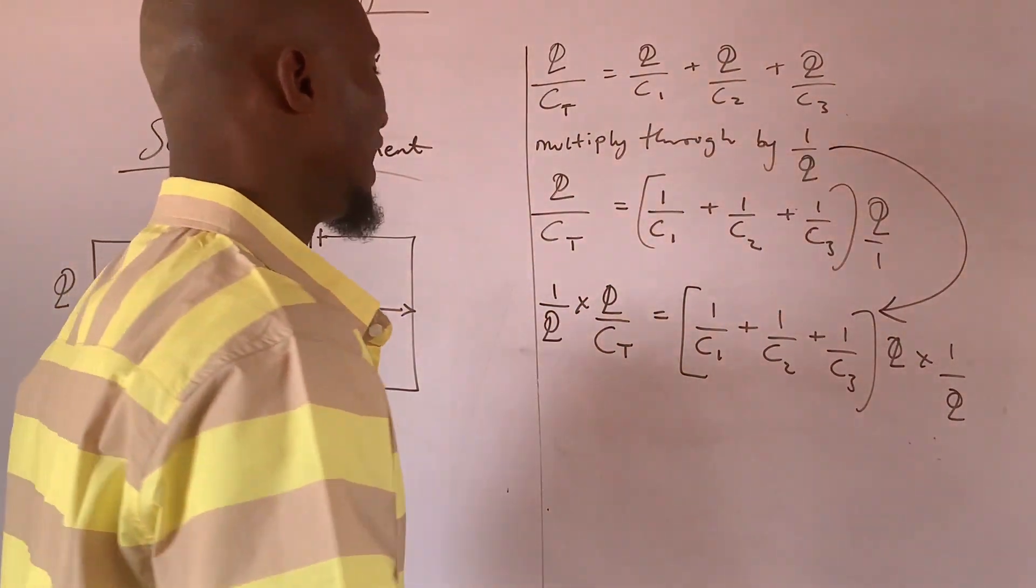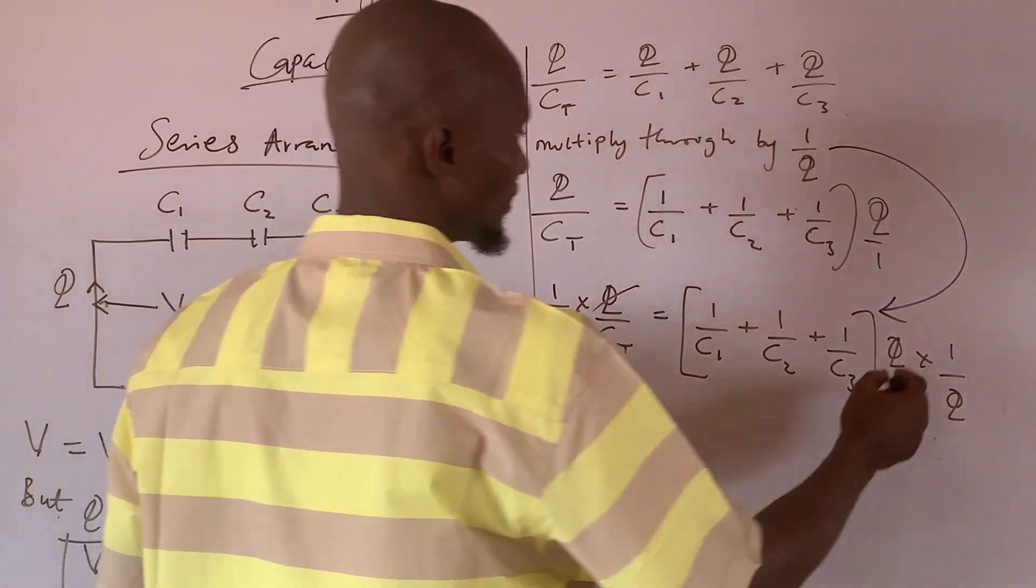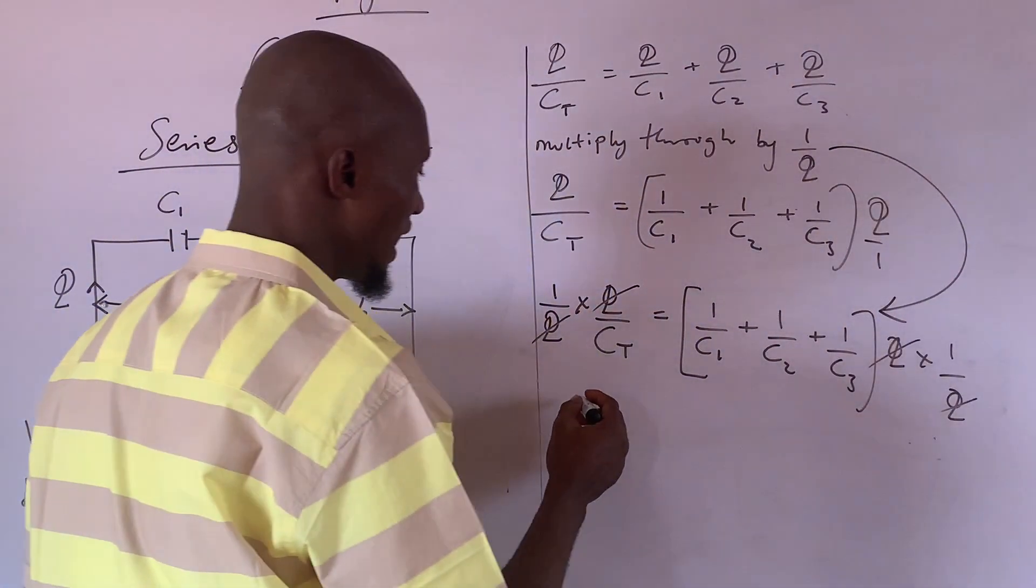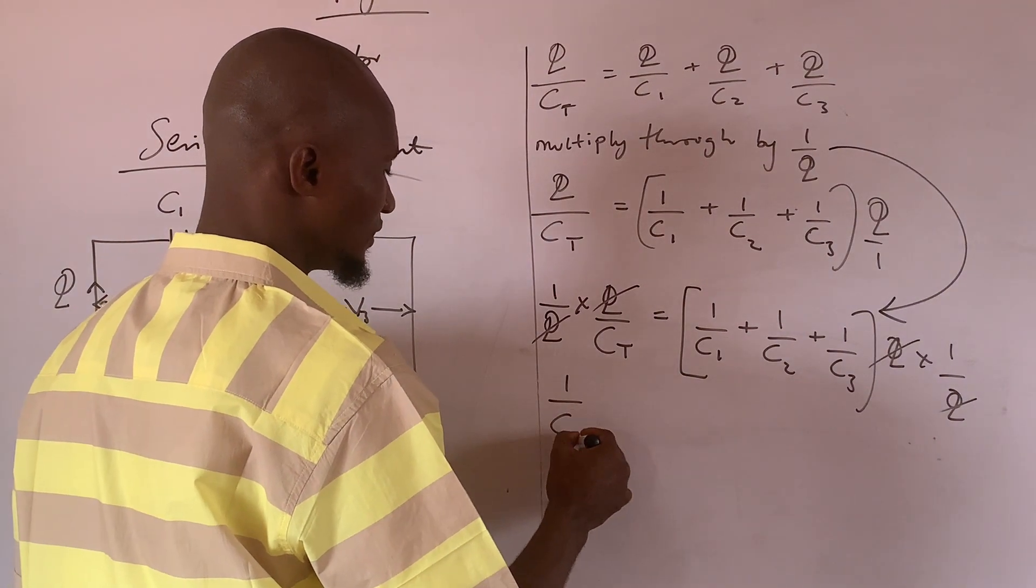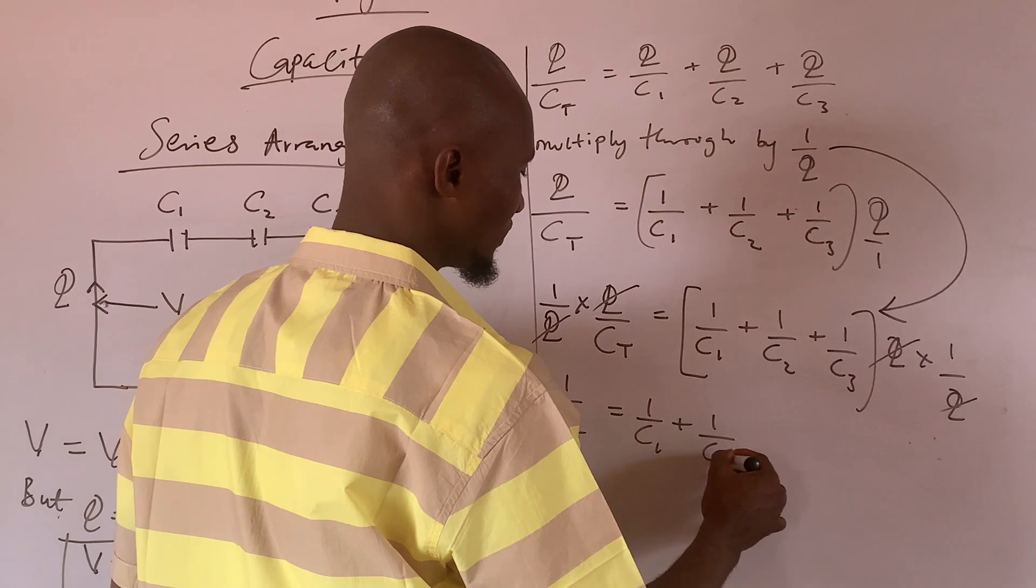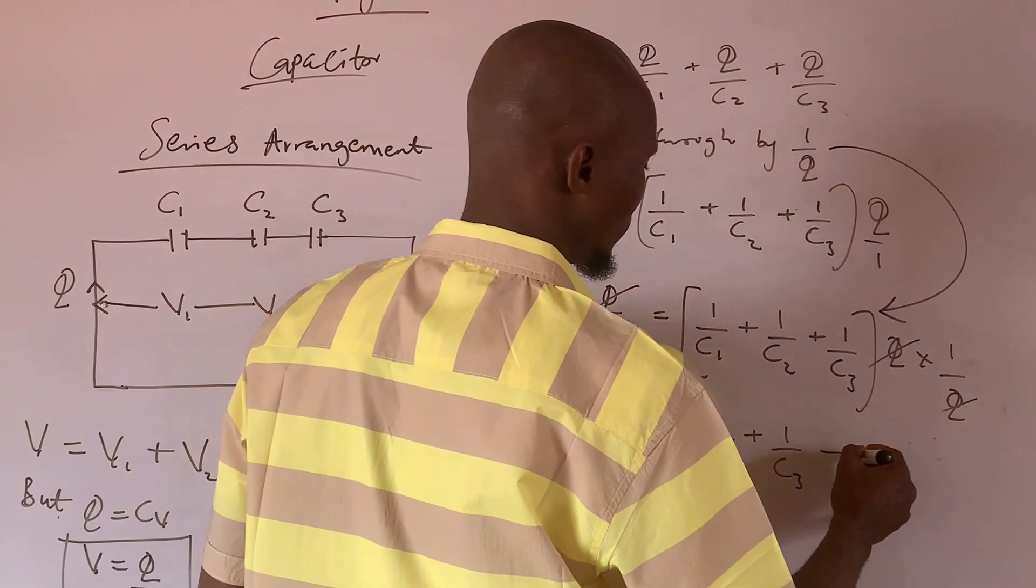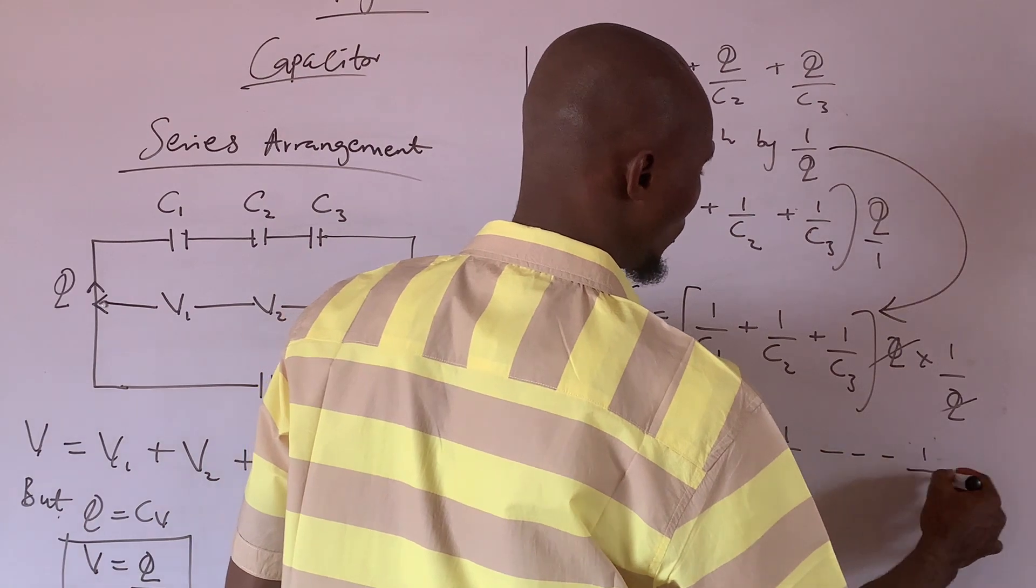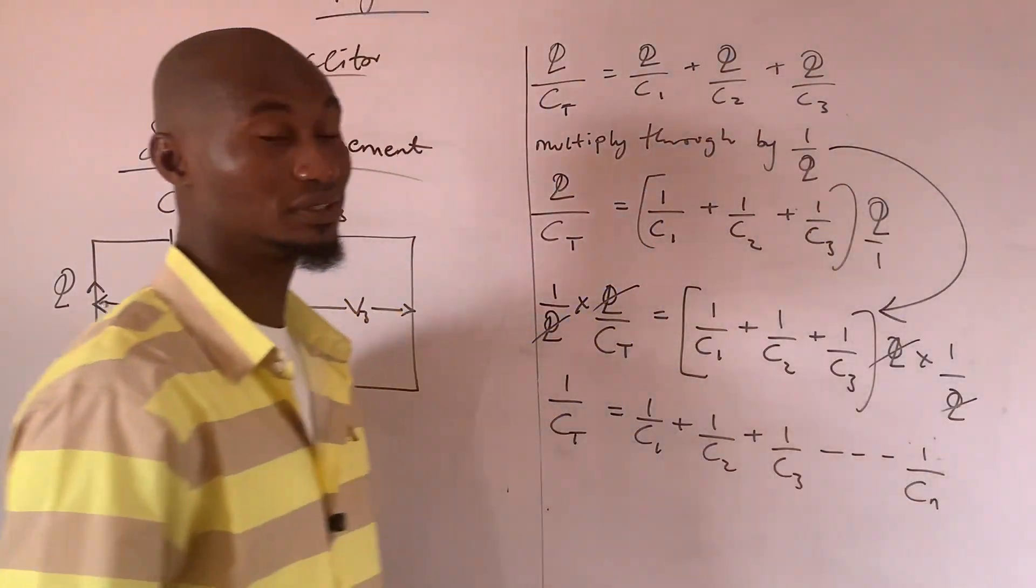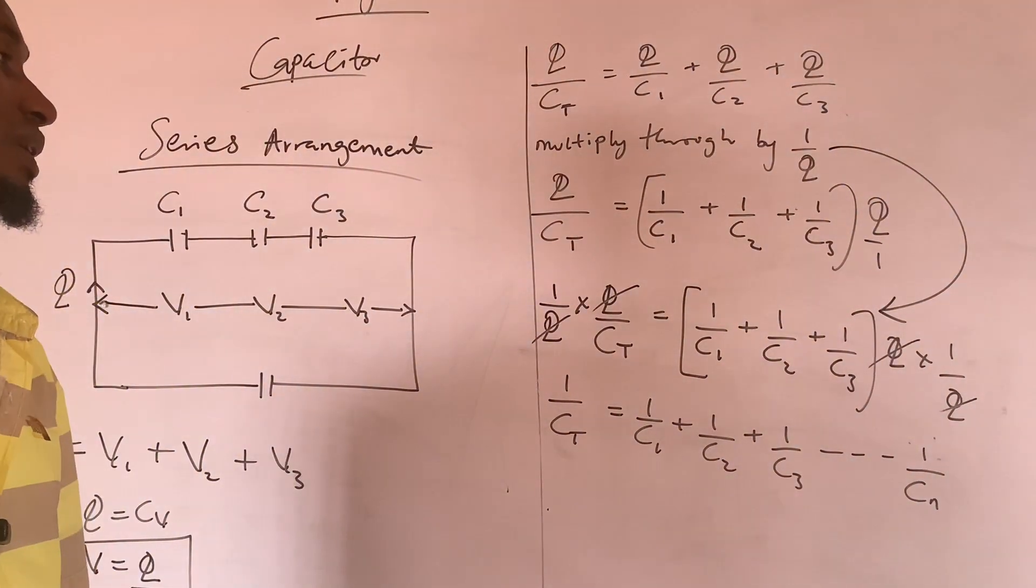Q times 1 over Q. I hope you know that this Q here means Q over 1. I believe you are aware of that fact. Now, this we cancel out here and this we cancel out here. So we have 1 over CT equal to 1 over C1 plus 1 over C2 plus 1 over C3.